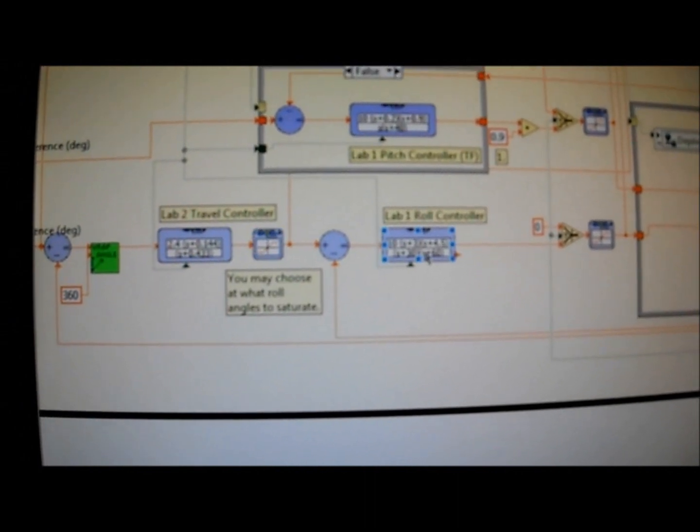So then what they're doing in this lab is adding an outer loop on travel controller. And so the output of the travel controller is the roll command, which then gets fed into the roll controller.